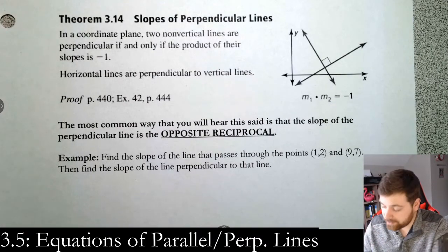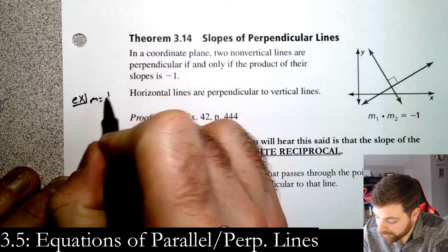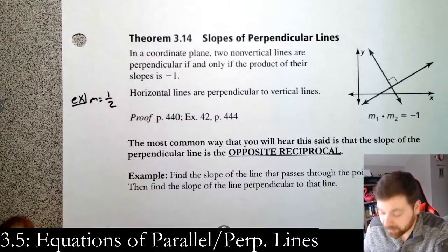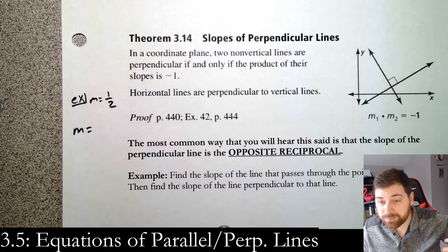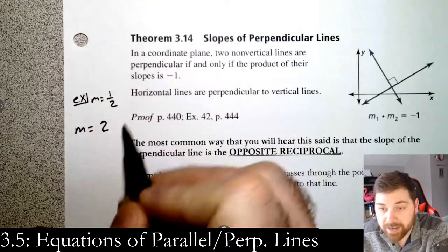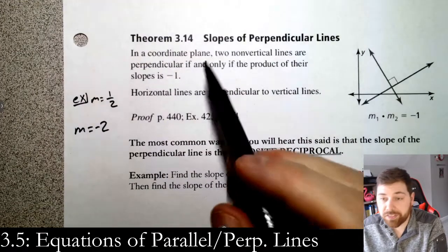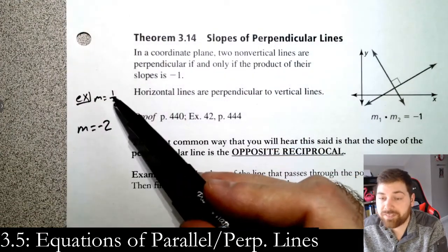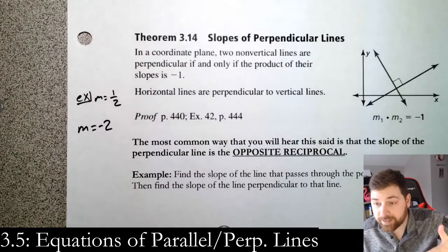So the idea is, for example, if my slope is 1 half, the slope of the line perpendicular is m equals—you flip it and add a negative, opposite reciprocal. So I flip it. If it's 1 half, it becomes 2, and I put a negative out front. Now according to the theorem, if I take negative 2 times 1 half, certainly I get negative 1 and we're good to go. So flip it, add a negative.